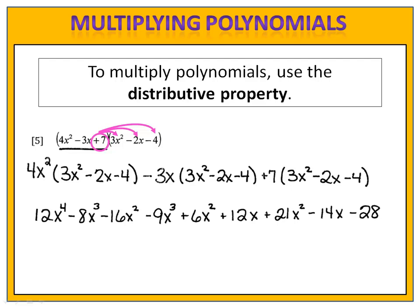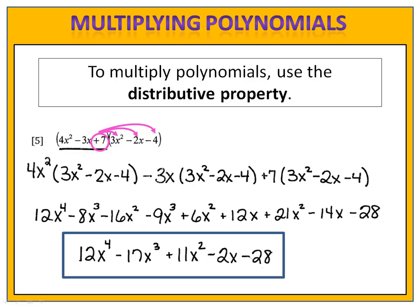Now we can combine like terms. We end up with 12x to the 4th minus 17x to the 3rd plus 11x squared minus 2x minus 28. Even though this problem was a little more involved and looked a little more tedious, all we really did was use the distributive property.